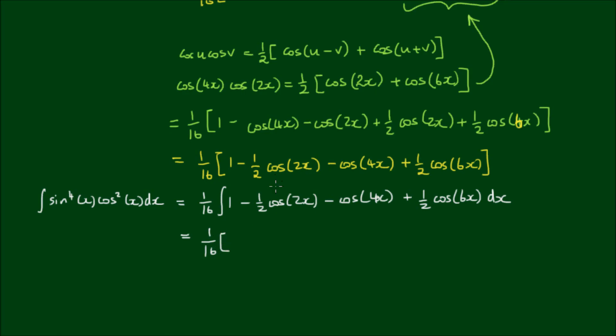So you have 1 on 16. 1 integrates to x minus 1 half. Cos integrates to sin, but we have to divide by the differentiation of 2x. So this gives us 1 half minus cos integrates to sin, divide by the differentiation of 4x, so it's effectively multiplied by 1 quarter, plus 1 half of sin, divide by the differentiation of 6x, which is effectively multiplied by 1 sixth. And, of course, plus an integration constant, c.